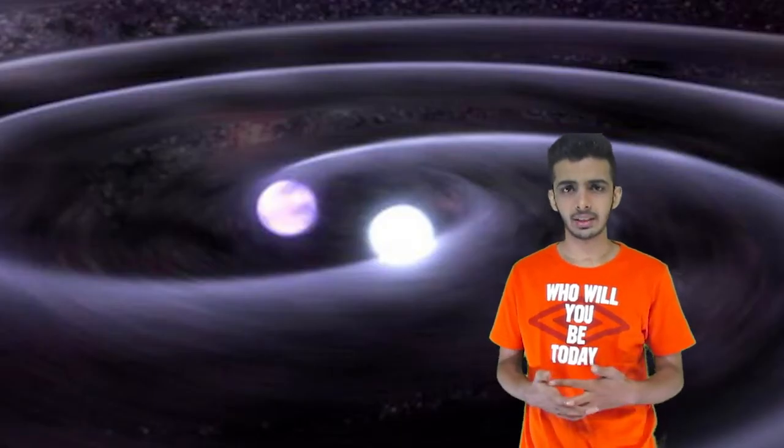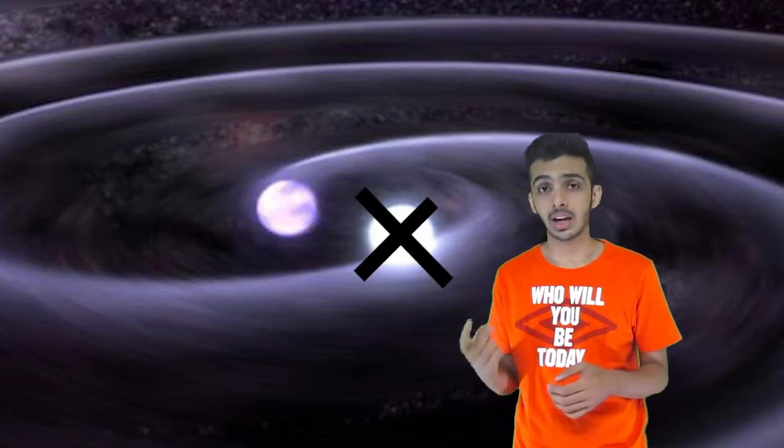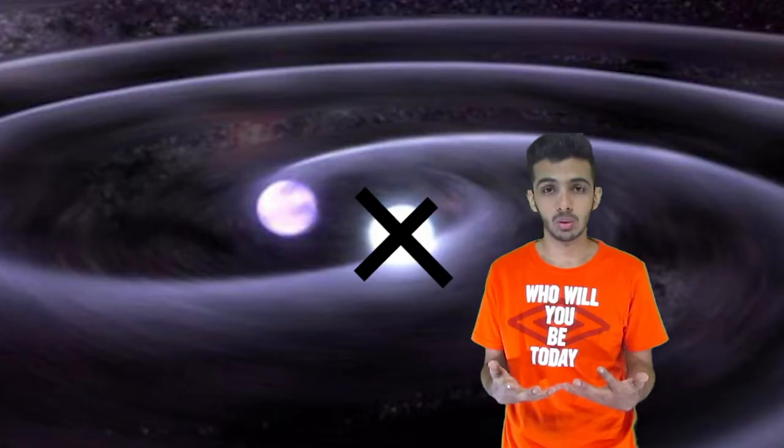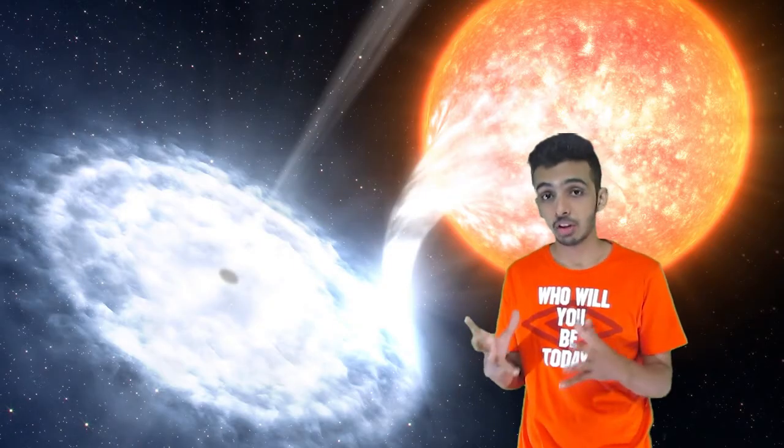So for the second technique, I'll take an example. Many times in a two-star system, one of the stars dies, becoming a black hole. So now, because of the immense gravity of the black hole, stuff from the other star starts falling into the black hole.